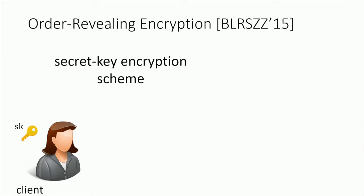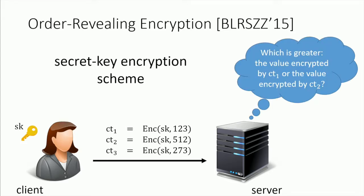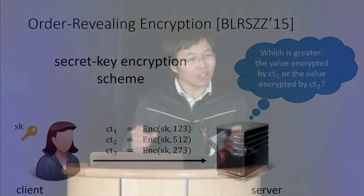In an order-revealing encryption scheme, it's a secret key encryption scheme where the client possesses an encryption key. The client can encrypt numeric or alphabetic values and send them to the server. What an order-revealing encryption scheme allows, as the name suggests, is that it allows the server — using only publicly available information — to compare two ciphertexts. Namely, the server can take an encryption of message one and an encryption of message two, and given only those ciphertexts, decide that the first is greater than the second. This enables legacy-friendly range queries on encrypted data: whenever you need to sort or search, you use the comparison operation provided by the ORE scheme.